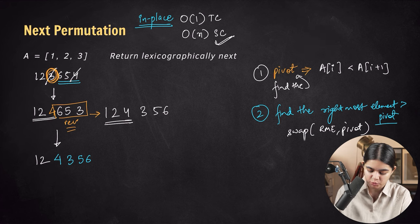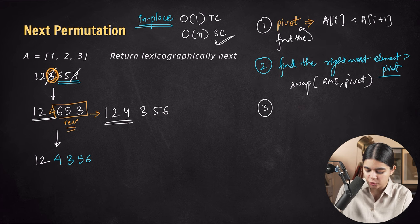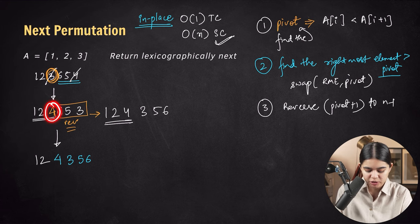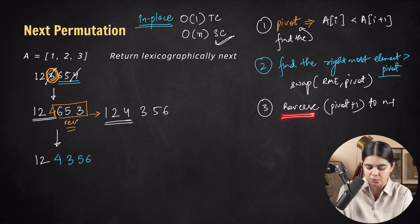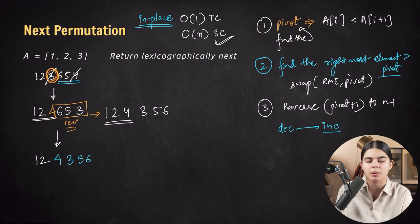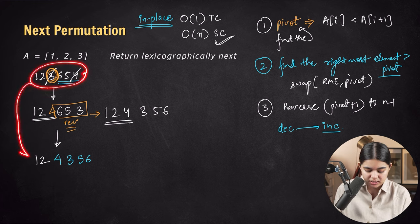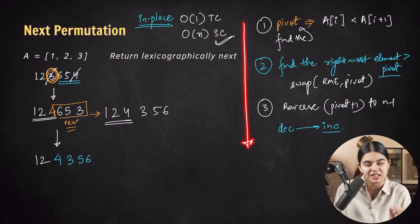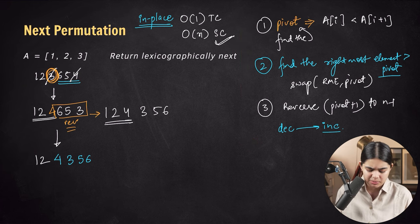The third step is to reverse elements from pivot plus 1 position to n minus 1. Because they are already in decreasing order, reversing them gives increasing order — the smallest possible arrangement of those elements. This completes the logic for finding the next permutation.